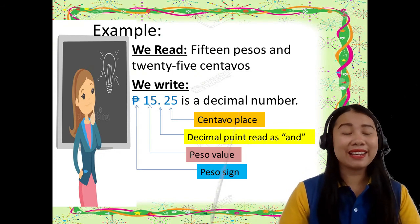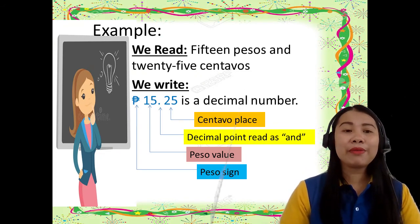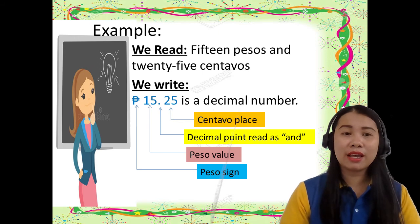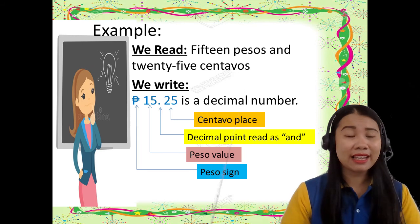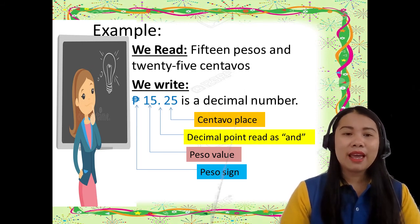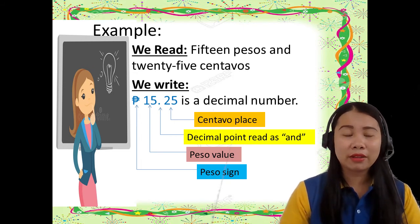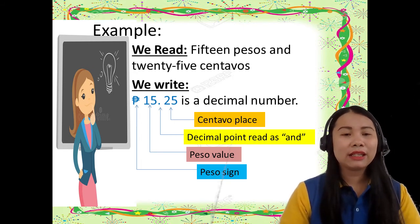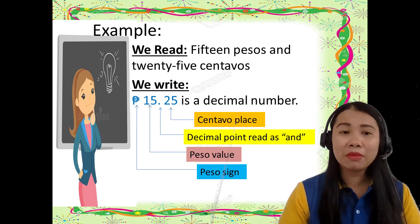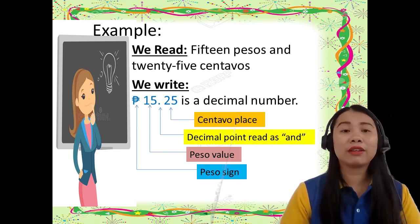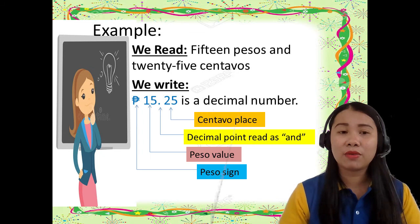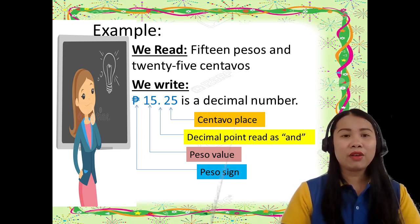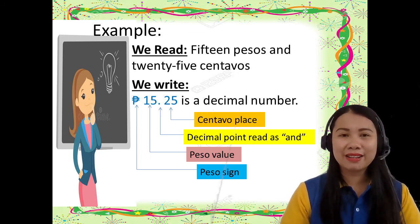The decimal point is read as 'and.' So, for the last example: we read ₱15.25 as 15 pesos and 25 centavos. How do we write it in symbol? First, we write the peso sign. Next, the peso value, which is 15. Next is the decimal point. And last is the value of the centavo, which is 25. So again, we read it as 15 pesos and 25 centavos.